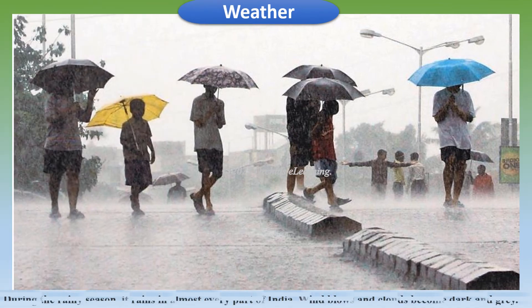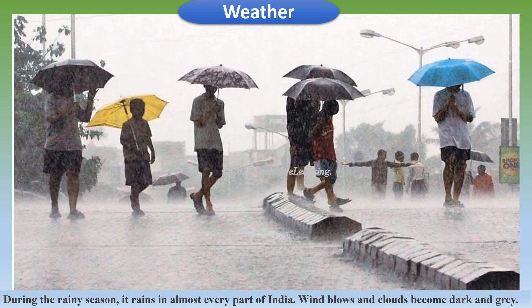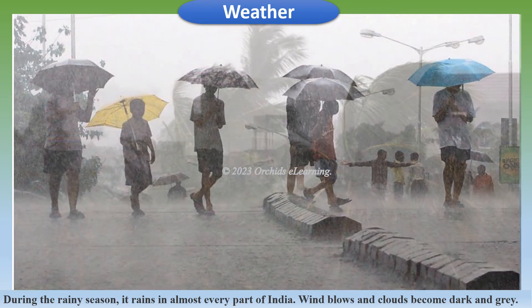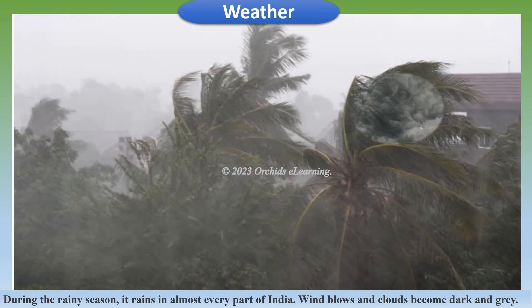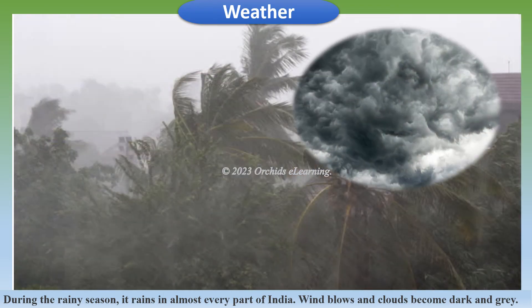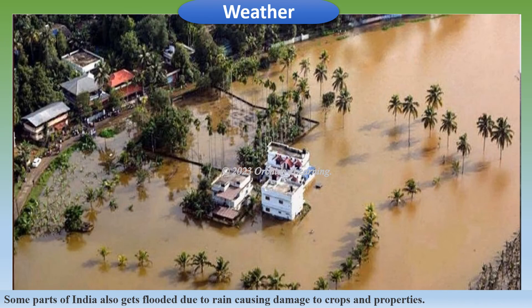During the rainy season, it rains in almost every part of India. The wind blows and clouds become dark and grey. Some parts of India also get flooded due to rain, causing damage to crops and properties.